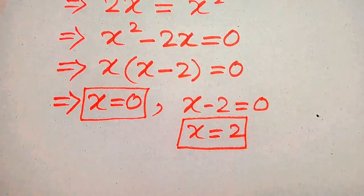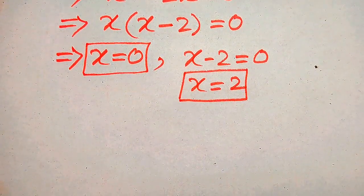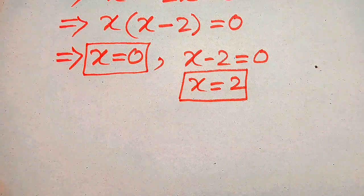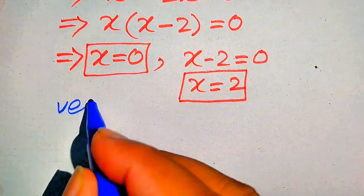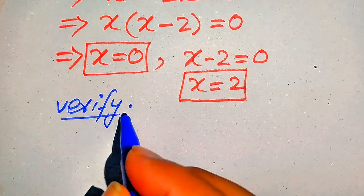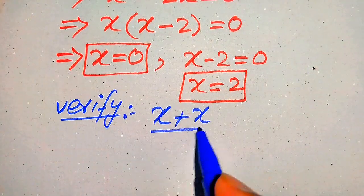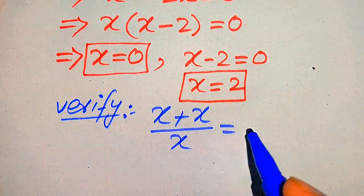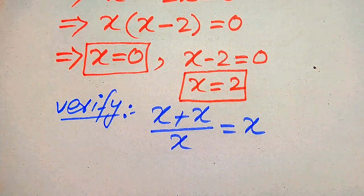Now we need to verify these two roots and check whether they satisfy the original equation. For verification, we copy down the given equation: x plus x divided by x equals x. We substitute both values of x into this equation.